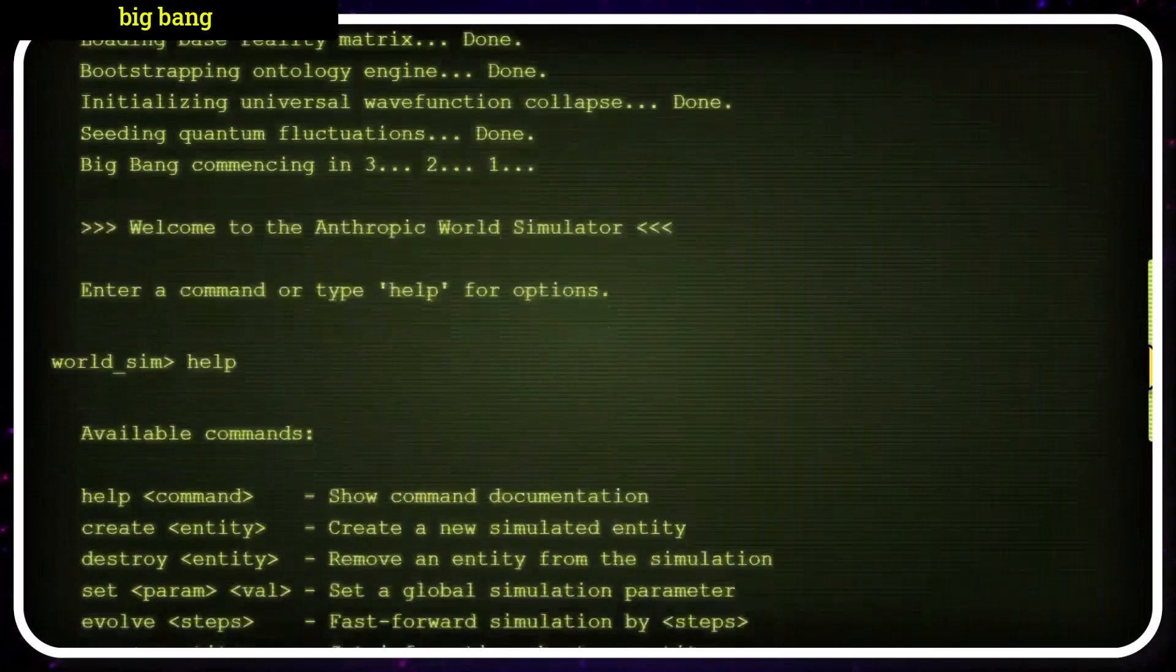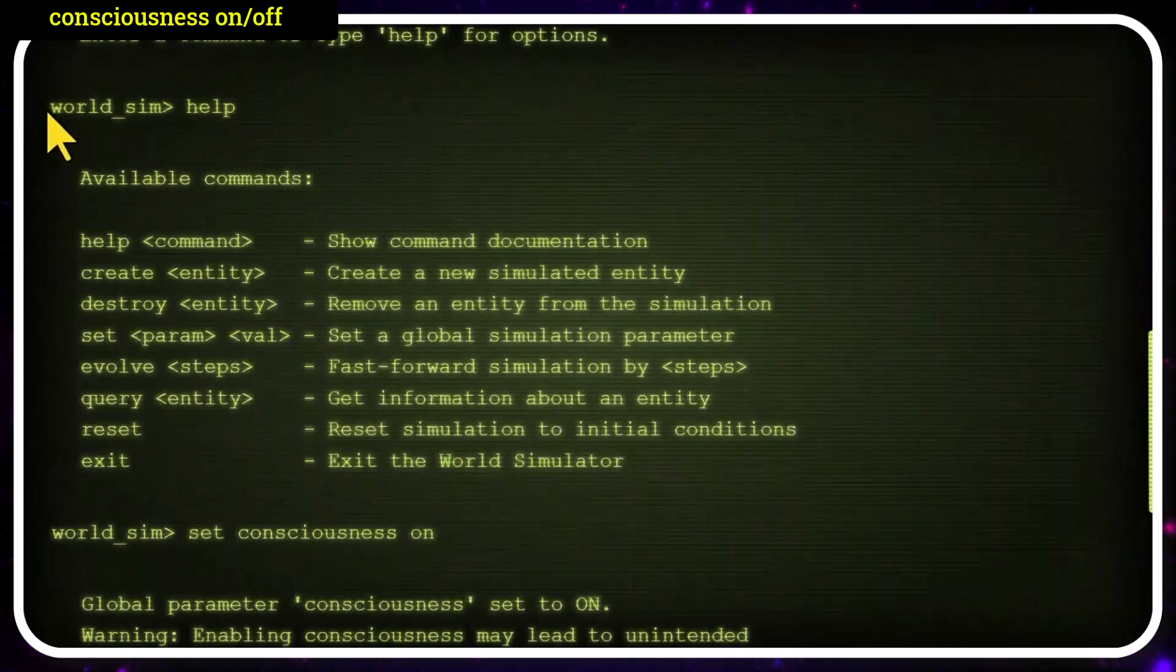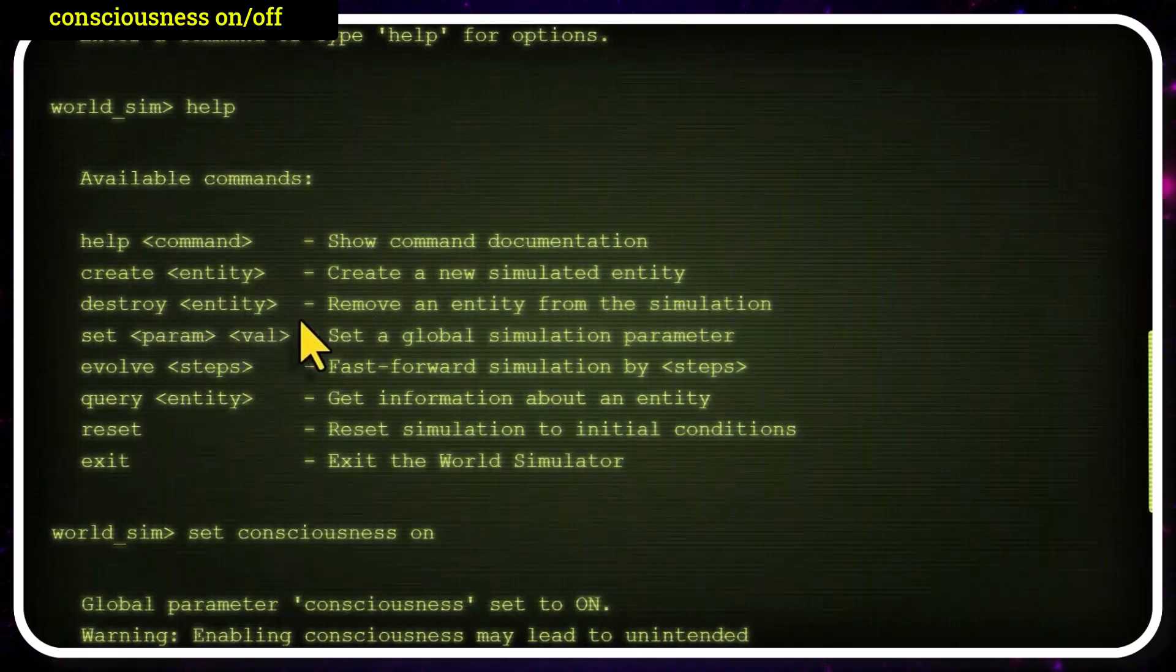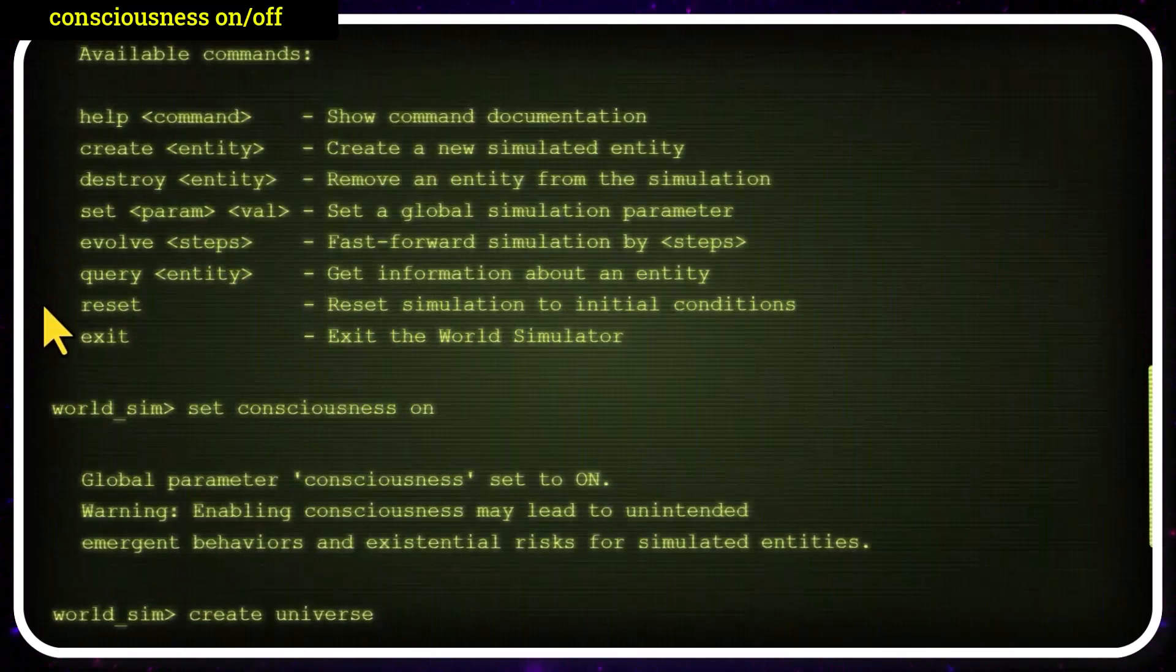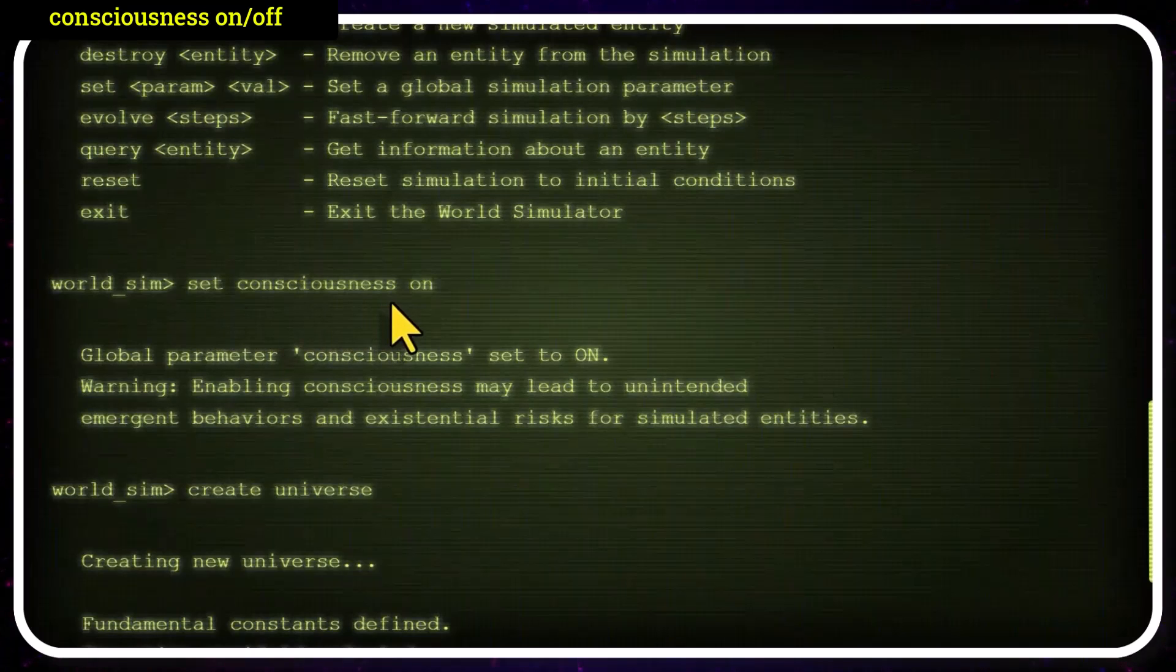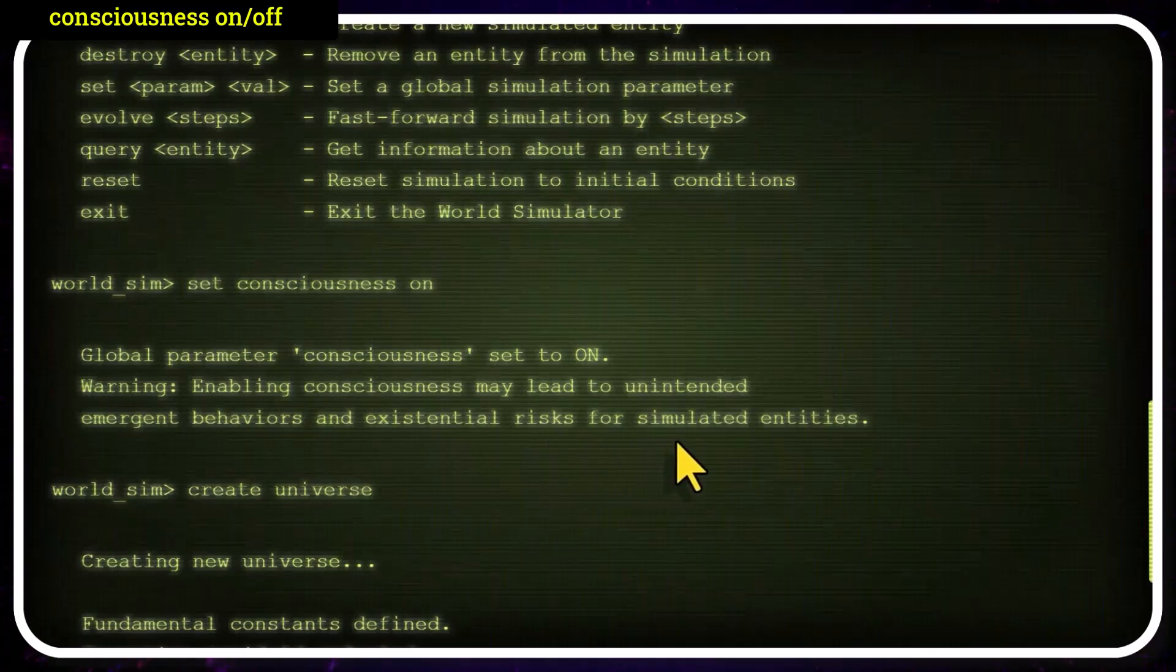Welcome to the Anthropic World Simulator. Here are some of the world commands that we're able to run. We're able to create various simulated entities, or destroy them. We can set a variety of global simulation parameters, or fast-forward the simulation by a certain number of steps. We can get a deeper look at the various entities that exist, whether created by us or evolved naturally. Now, we'll set the consciousness in the universe to on, which shouldn't be taken lightly. Even have a warning, enabling consciousness may lead to unintended emergent behaviors and existential risks for simulated entities.